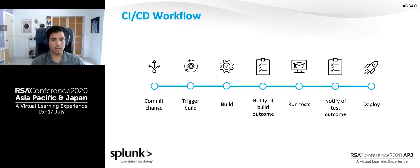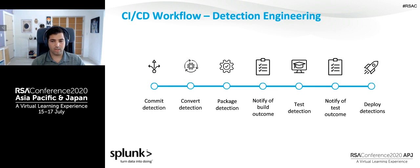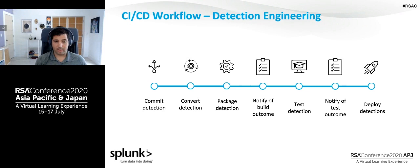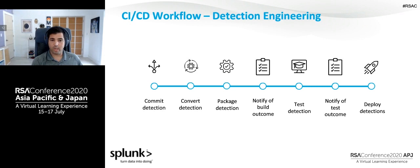If we take this concept and apply it to detection engineering, we can layer it and do almost exactly the same thing. You commit a detection. You can convert those detections to whatever SIEM or system you're going to deploy them to. Most users today have more than one piece of software in a large environment, which means you'll need to package it for that environment. More importantly, you need to be notified whether the build for this environment is successful, then take a data-driven approach to the detection going out to production. If the detection is tested successfully, the next logical step is to get it out to production to find bad things.